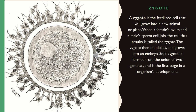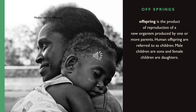A zygote is the fertilized cell that will grow into a new animal or plant. When a female's ovum and a male's sperm cell join, the cell that results is called the zygote. The zygote then multiplies and grows into an embryo. So a zygote is formed from the union of two gametes and is the first stage in an organism's development.